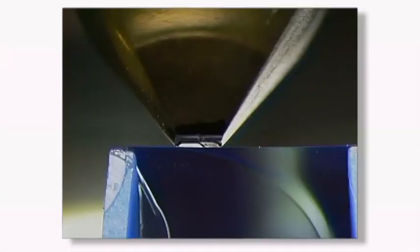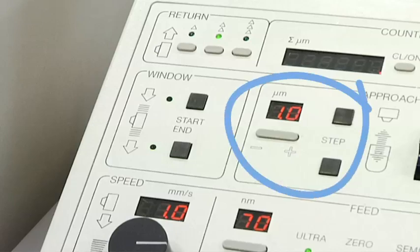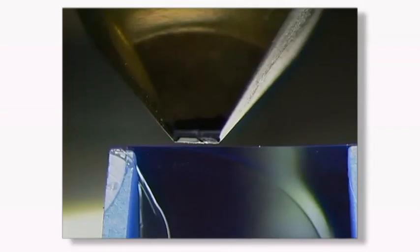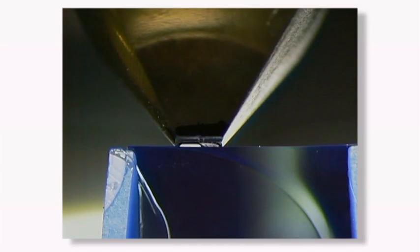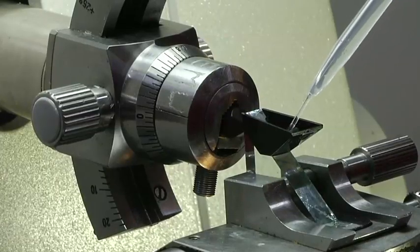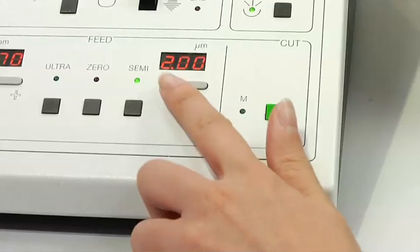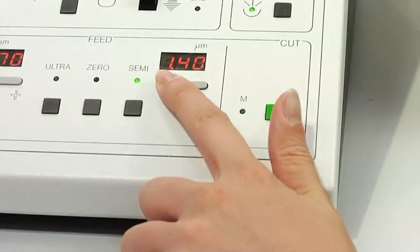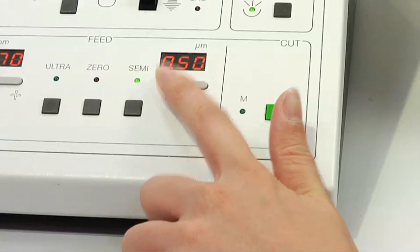If not, adjust it. When a third of the reflection remains, approach using the fine approach in one micrometer increments until the reflection is just about to disappear. Fill up the knife boat with distilled water until the surface of the water presents a silver sheen. The water will support the sections as they come off the knife. Set the feed to half a micrometer and turn the hand wheel until sections are being cut.